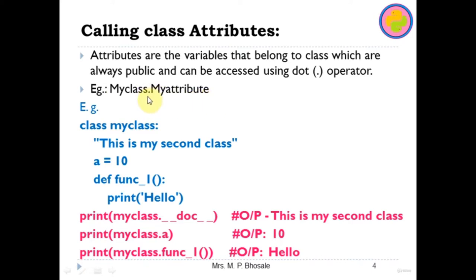In the example, there is one document string, one variable, and one function. To print the doc string, use the class name dot double-underscore doc double-underscore. To print the value of any variable declared inside the class, use class name dot variable name. To call the function — which is also an attribute of the class — use class name dot function name.